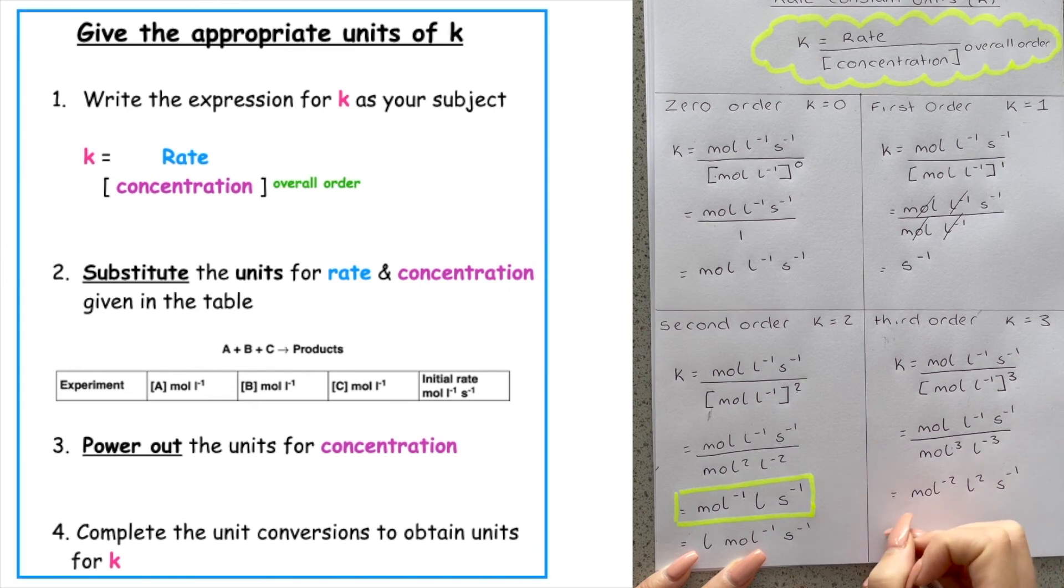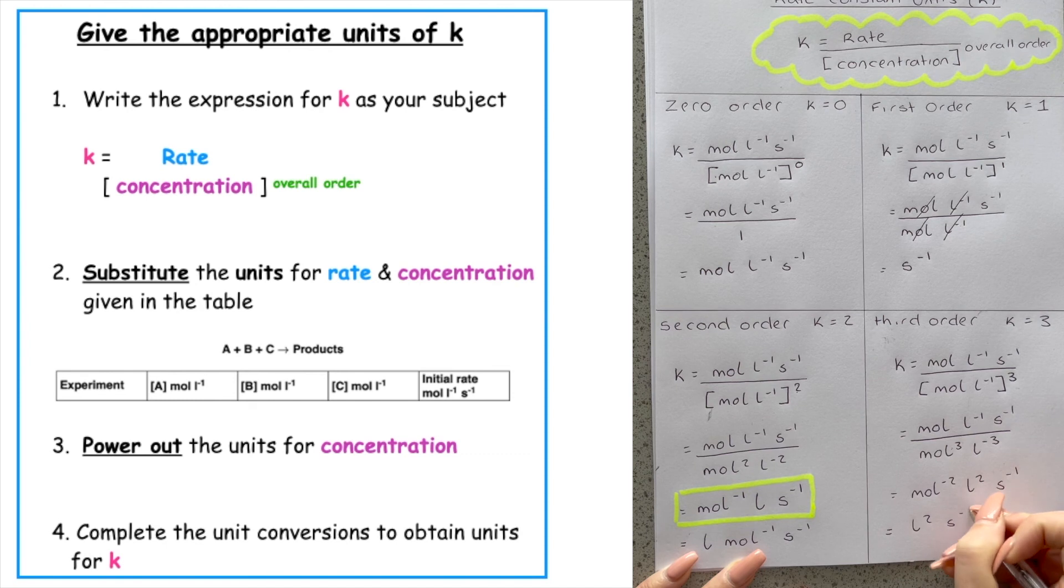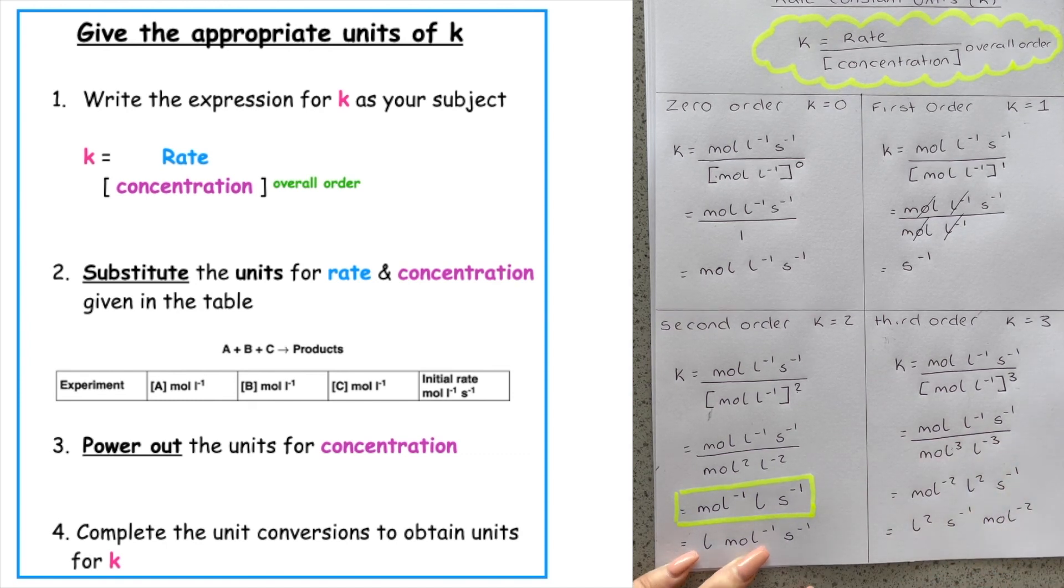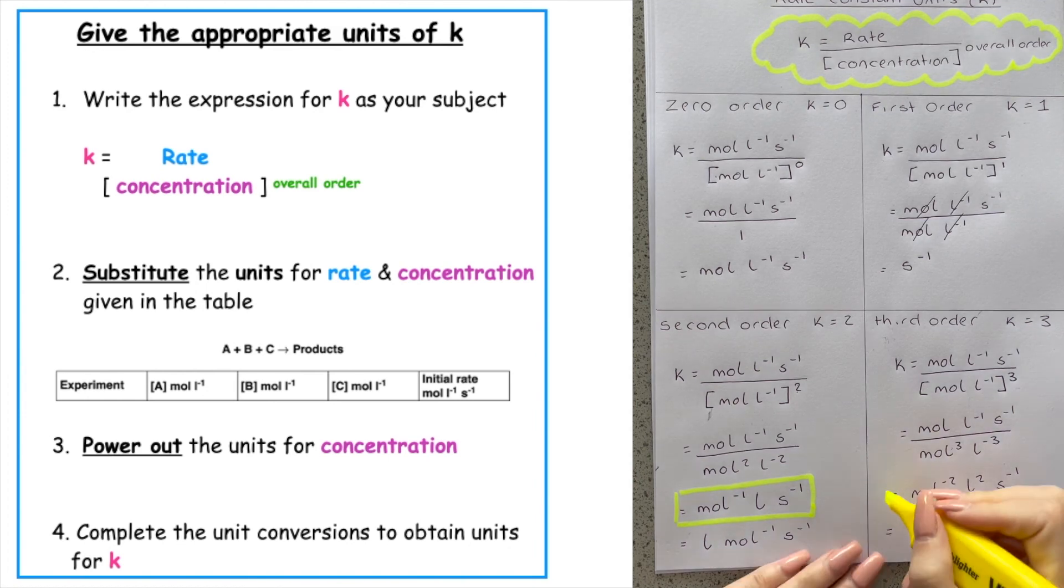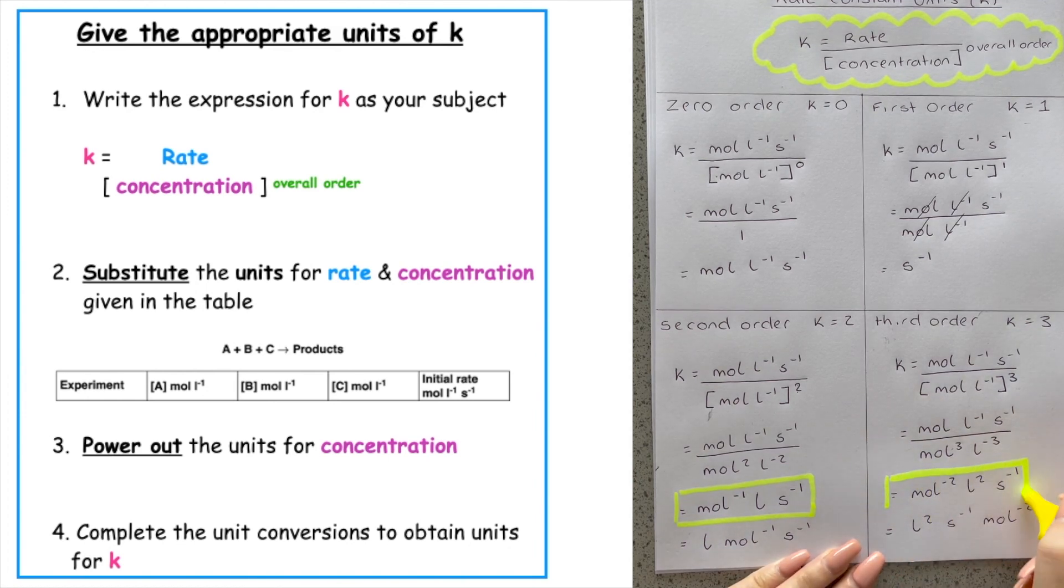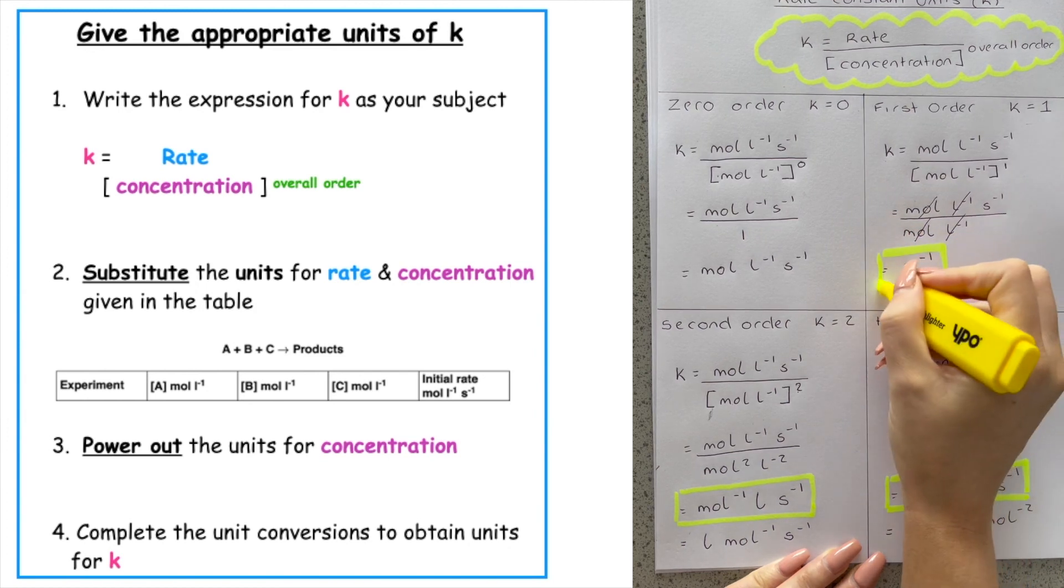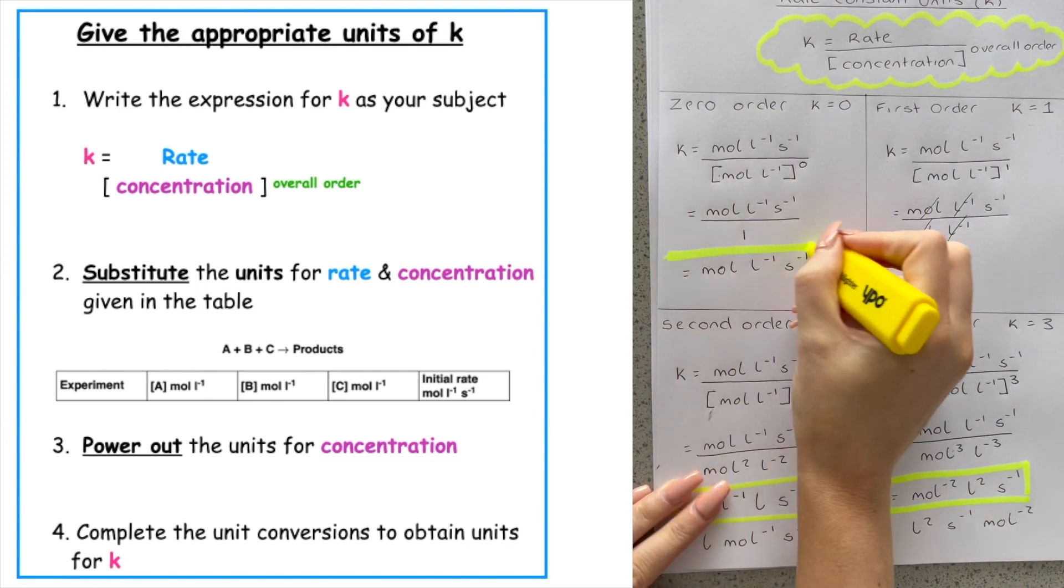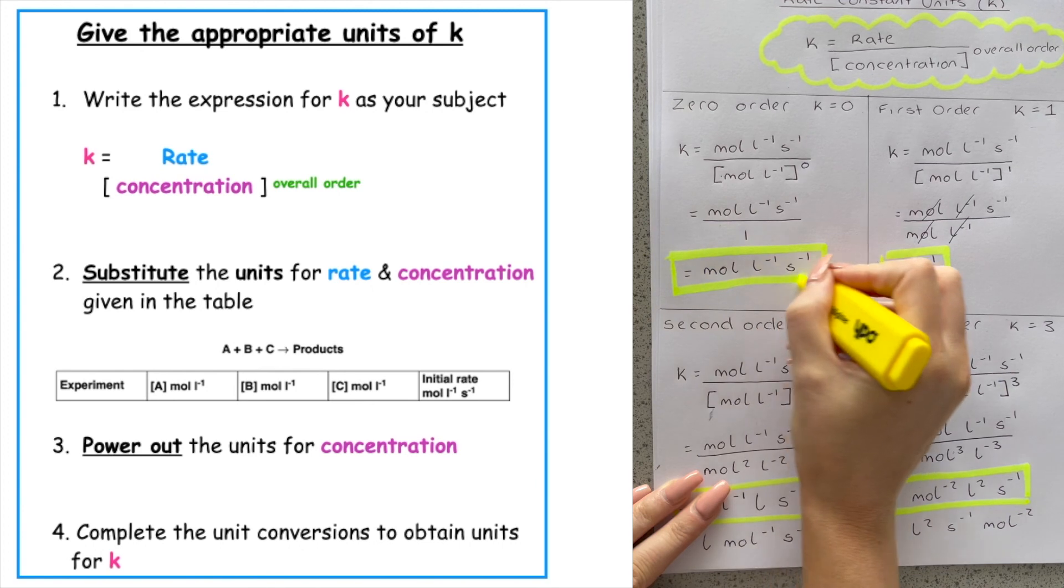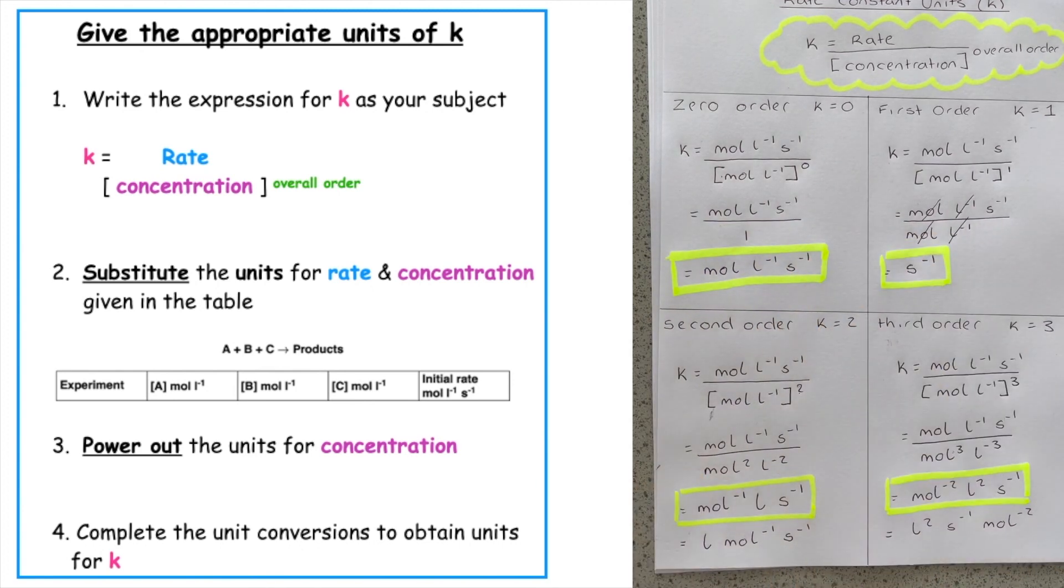And again, you can rearrange that expression to have your positive entity first. Your negative one and then your mole to the minus two. But again, this here is also accepted. So these are the four different units that you have to be able to work out when you are identifying the correct units for the rate constant k.